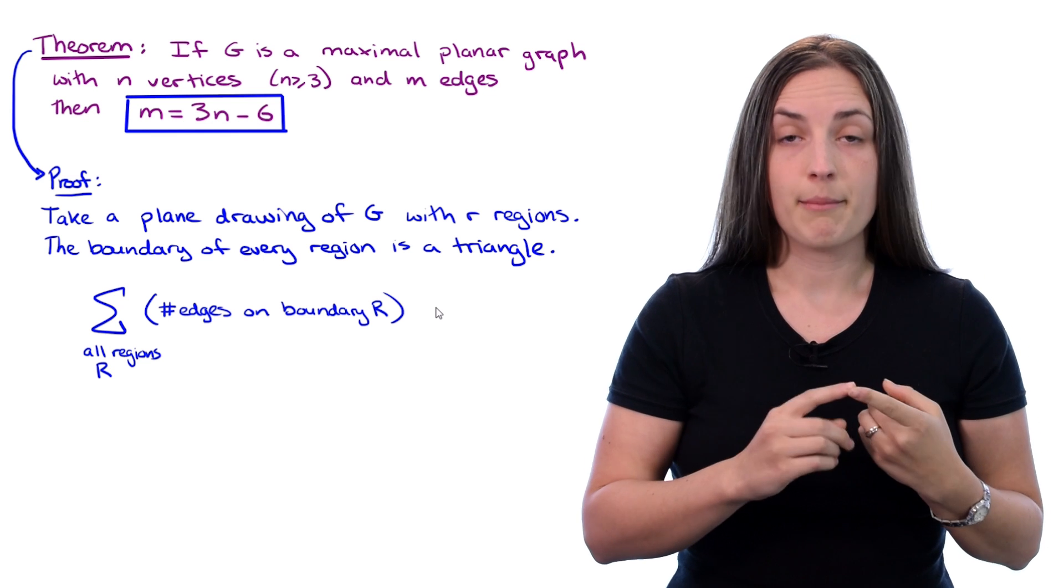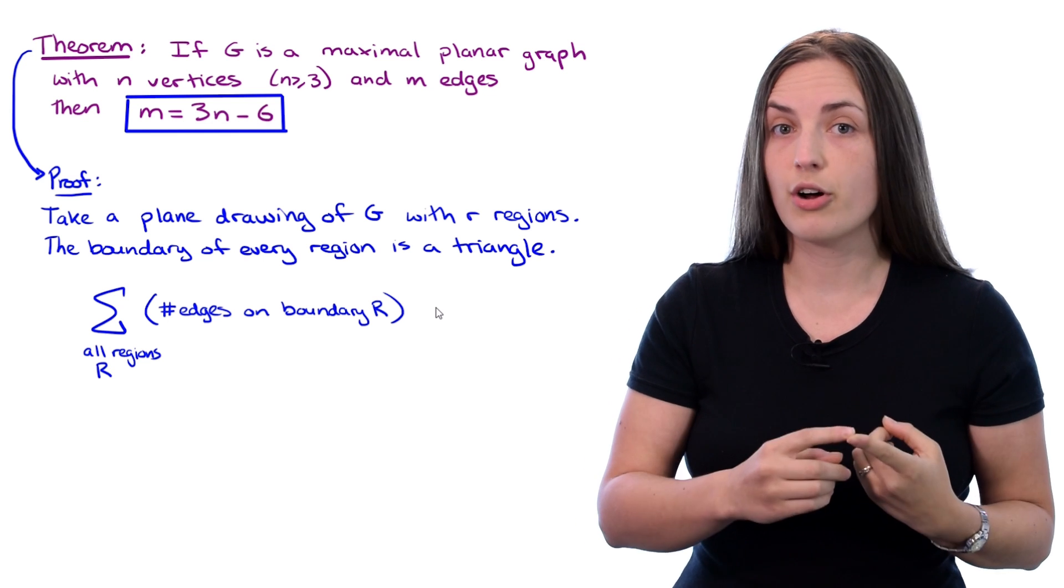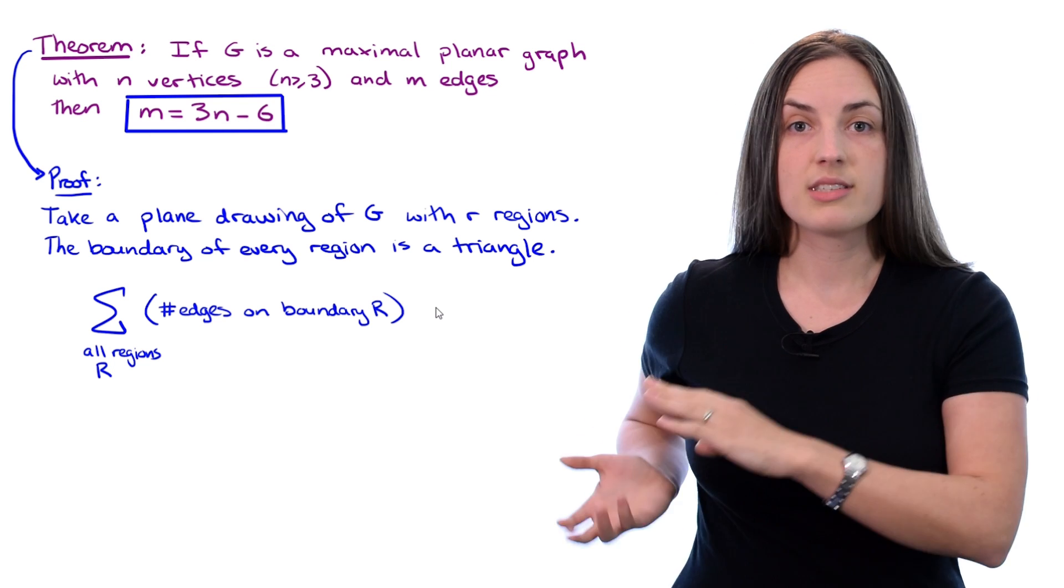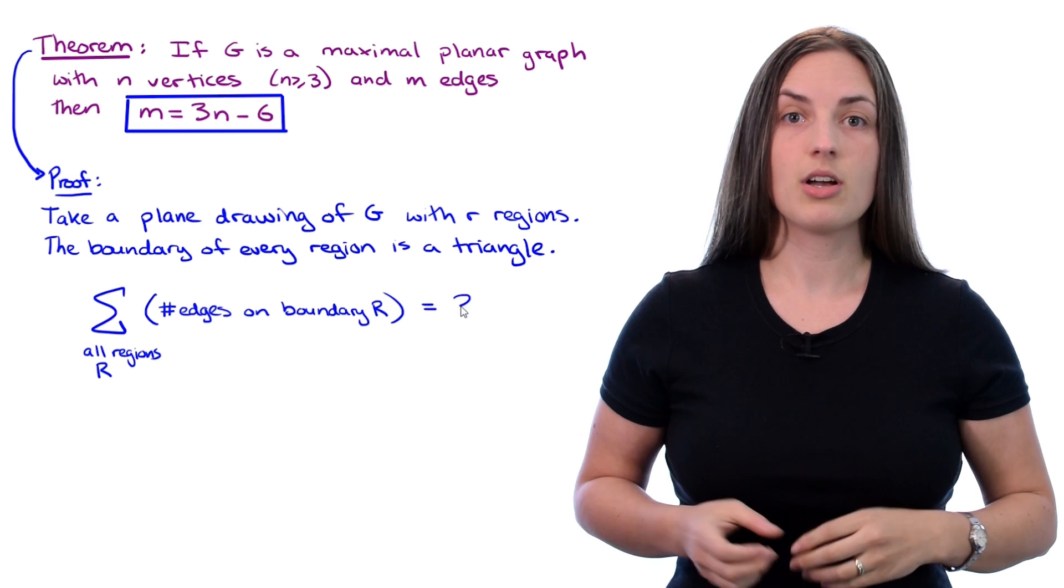Well, obviously, there are little r number of regions, and each of those sees exactly three edges in its boundary, so this sum will equal 3 times R.